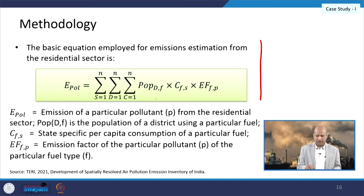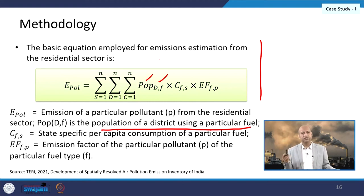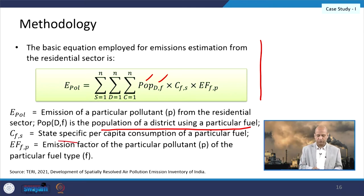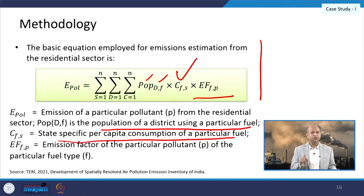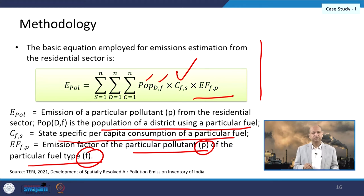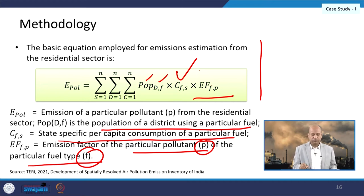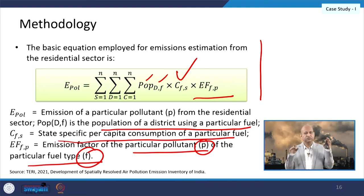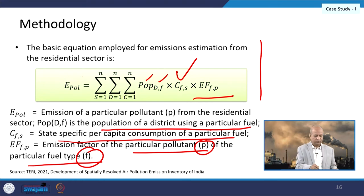The basic equation used here involves the population in a district using a particular fuel, the state-specific per capita consumption (CFS) of that fuel, and the emission factor for fuel type F and pollutant P. For each pollutant and each fuel type this equation is applied, then summed over all districts and fuels to produce a matrix of emissions for different pollutants—so much PM10 emitted, so much SO2 emitted, and so on.